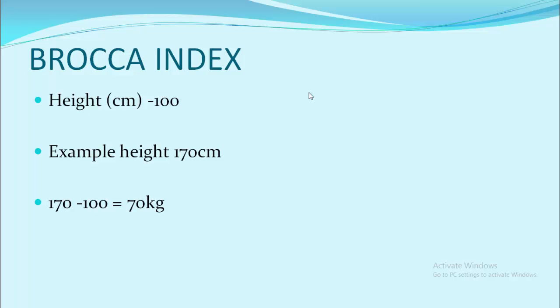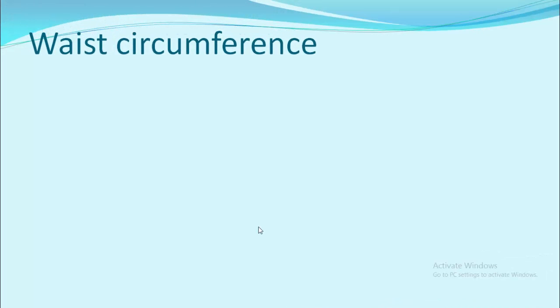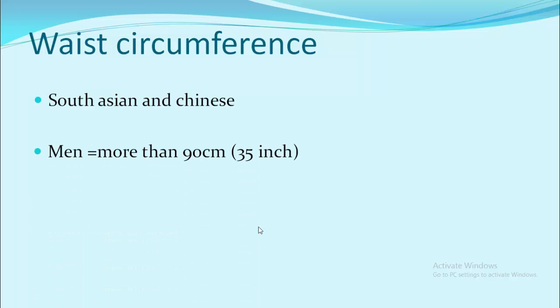Now we are going for the last calculation, waist circumference. Generally, there is a fact that Europeans and Americans will be having a greater hip compared to South Asians and Chinese. But even though they are not prone to disease, their normal range lies between 90 centimeter for men and 80 centimeter for females. That is 35 inch and 31.5 inch.